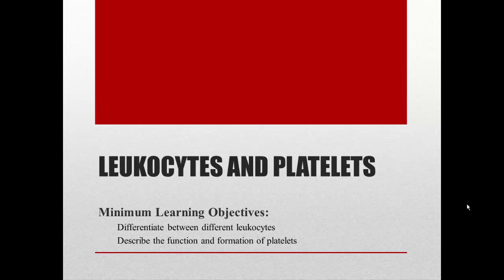Now we're going to look at leukocytes and platelets. Leukocytes are the white blood cells. Platelets are also called thrombocytes. In this video lecture, we're just going to look at some background and general concepts about the different types of leukocytes, because we'll spend a lot more time on their functioning when we do immune system. We'll also look very briefly at platelets, because we'll spend more time on what they do when we talk about hemostasis.